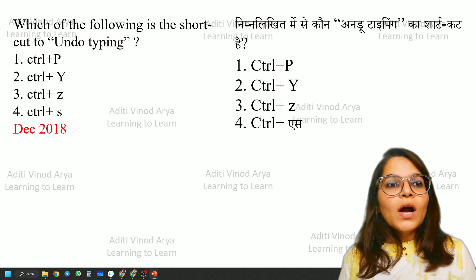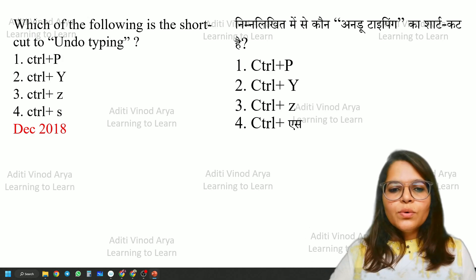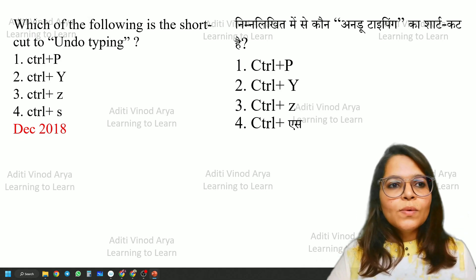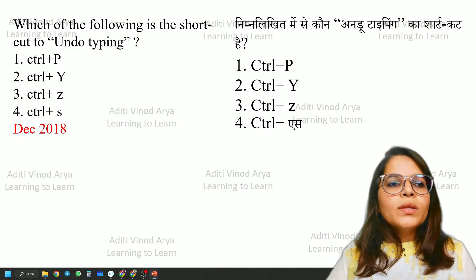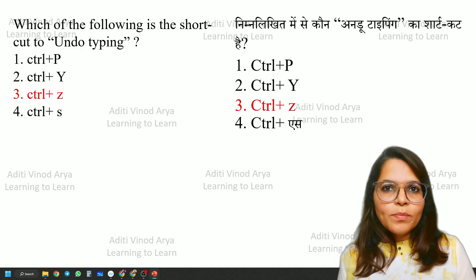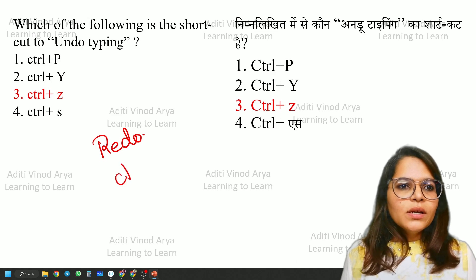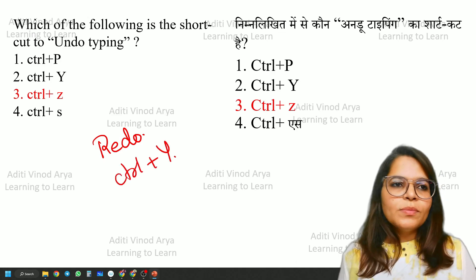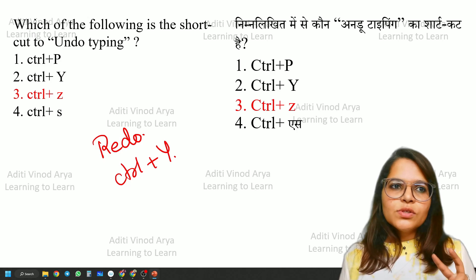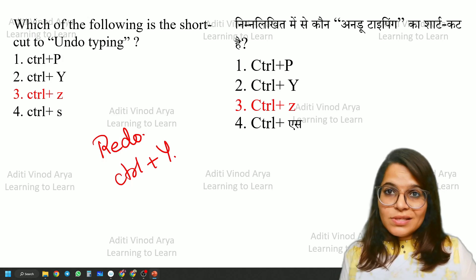Which of the following is the shortcut for undo typing? If you practically use computers in everyday life, this is one of the easiest questions. The correct answer is Control+Z — whatever you've done that you don't want, you press Control+Z to go back. If you want to redo it, that would be Control+Y. Also remember: Control+X is for cut, Control+S is for save, and Control+V is for paste.